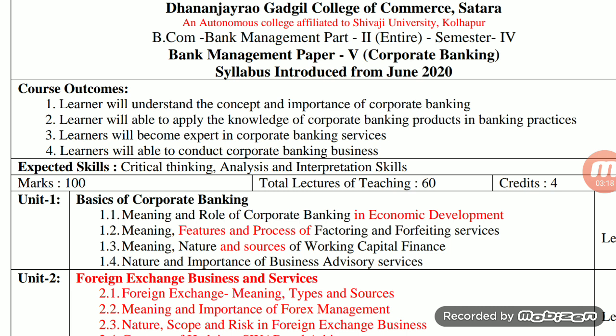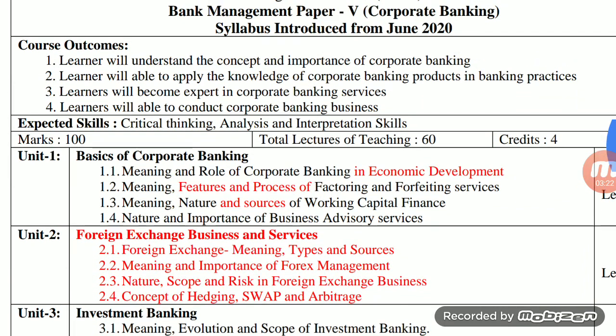The second content of this unit covers features and process of factoring and forfeiting services. Factoring is closely related to bill discounting — in factoring services, banks work as a middleman. Forfeiting is also a similar product to factoring, but more players are involved because it is related to international trade.